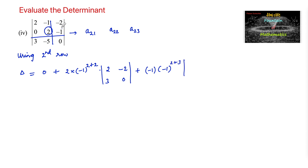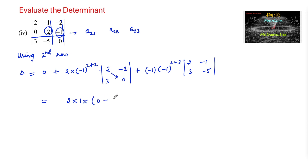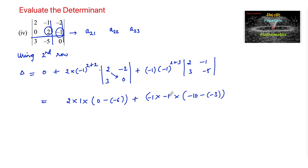The sub-matrix for the second term, found by deleting that row and column, gives: 2, -2 / 3, 0. The sub-matrix for the third term gives: 2, -1 / 3, -5. So we have 2 × (-1)^4 × (2×0 − 3×(−2)) plus (−1) × (−1)^5 × (2×(−5) − 3×(−1)).